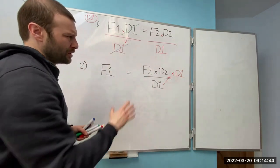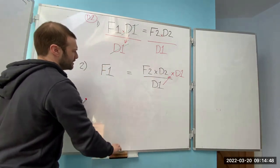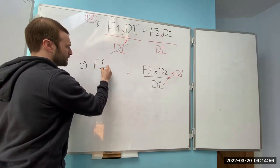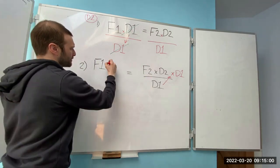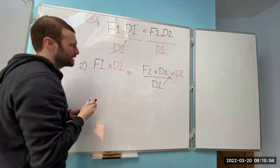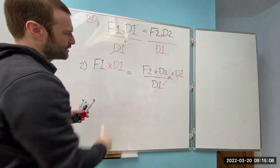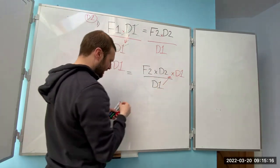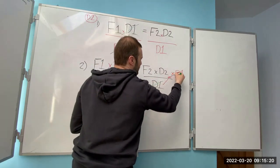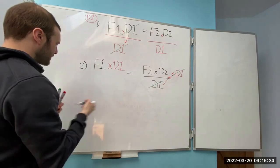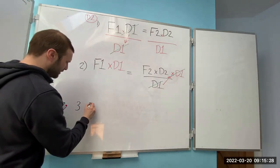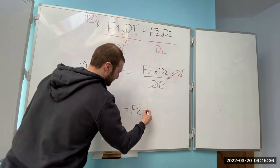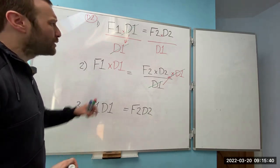So in order to get D1 upstairs, I've got to times it out. Times by D1 — whatever I do that side, I have to do this side. So now I'm back to: Force 1 times D1 equals Force 2 times Distance 2. The formula is balanced but untidy, so I can cancel that out and rewrite: F1 D1 equals F2 D2. Now I'm back to where I was at the beginning — everything's on the same level.